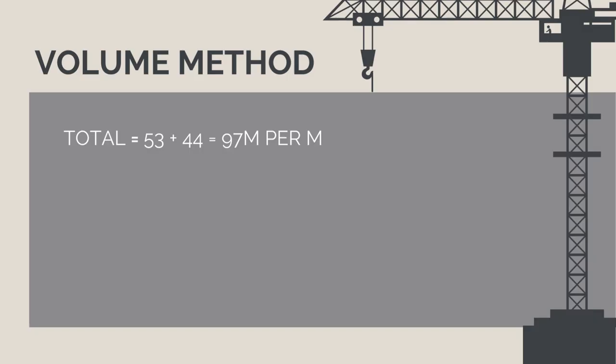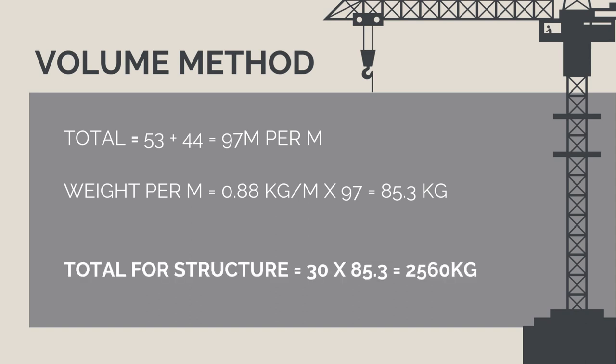Totaling this up for the structure, we add the length of rebar per meter for the wall and slab to get 97 meters. We then multiply this by the weight per meter of N12 bar to get 85.3 kilograms per meter of the structure. Then, the total for the structure will be 30 by 85.3 which is 2,560 kilograms of steel.